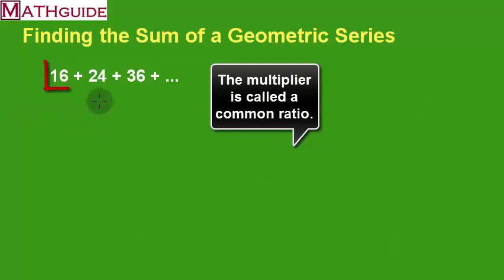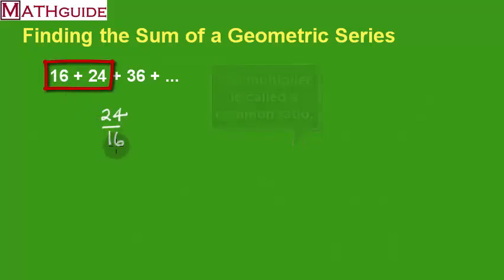if I take any two consecutive numbers, let's say I take these two numbers, and I take the right number divided by the left number. I'm just going to reduce this. By the way, I'm trying to solve for r, which is called the common ratio.